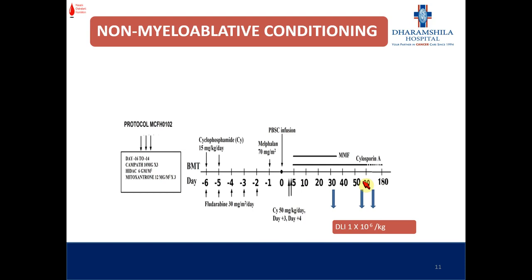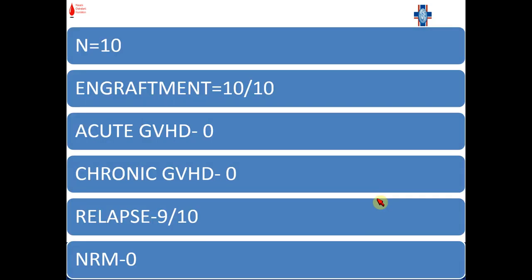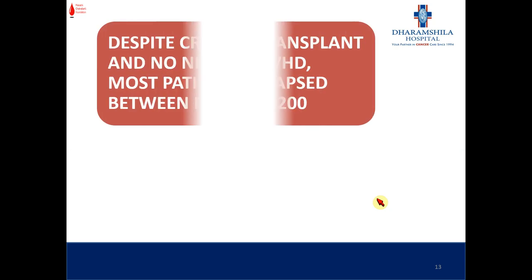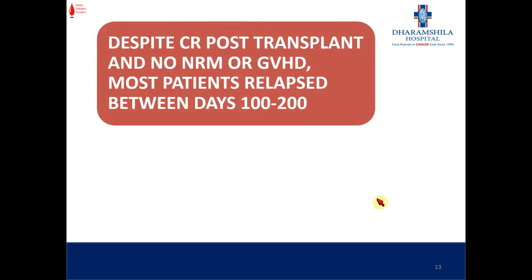As we expected these patients were going to relapse, we employed donor lymphocyte infusion of 1 million per kilogram on days 35, 60, and 90. With this protocol we treated 10 patients. Engraftment was not a problem, nor was acute or chronic GVHD. However, 90% of patients relapsed, and none survived. Our conclusion from this protocol was that reduced intensity conditioning is not sufficient for relapsed refractory AML, and importantly, PTCY induces very early and strong tolerance which cannot be bridged by low-dose DLI.